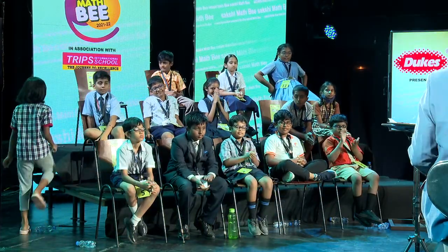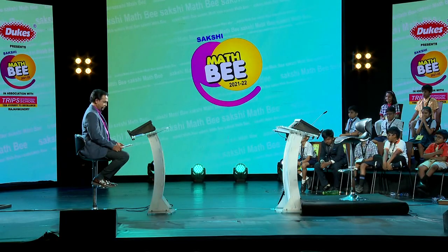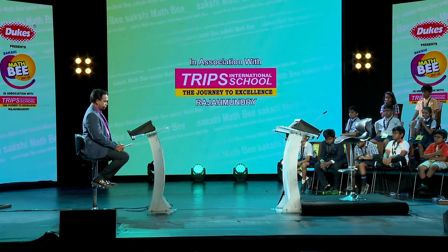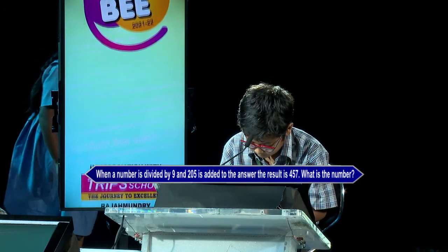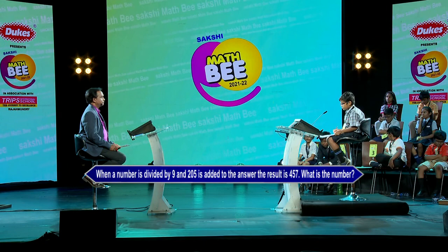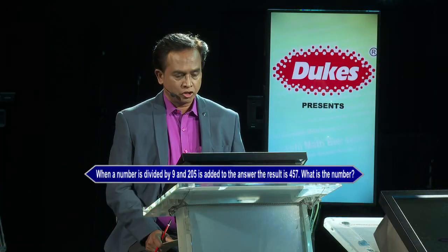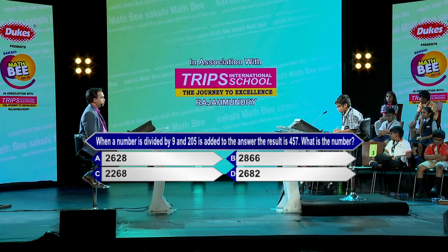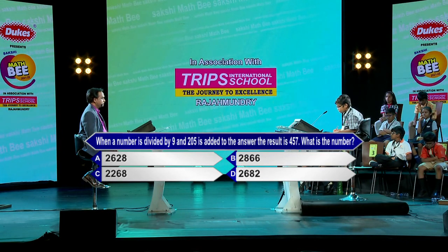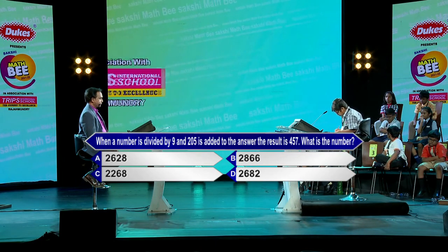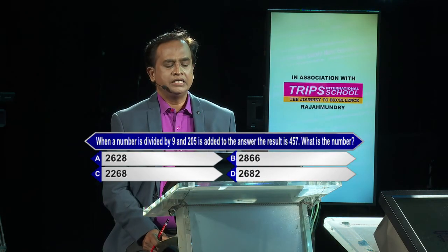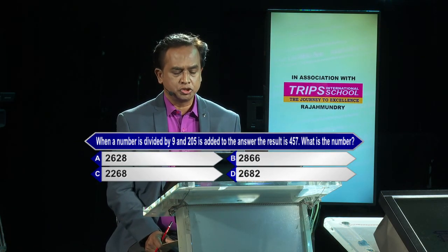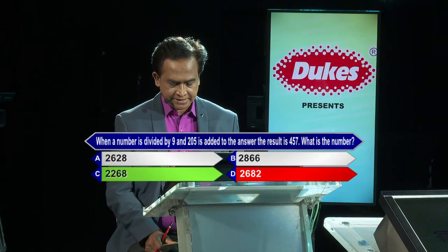Applause for all of you for such a nice competition. We'll go for the last two now. Dipanju, can I have you first? When a number is divided by 9 and 205 is added to the answer, the result is 457. What is the number? Options: A-2628, B-2866, C-2268, D-2682. Contestant answers option D, 2682. Kindly lock option D. Sorry, option D is incorrect. Option C is the correct answer. Don't worry, please get back to your seat.